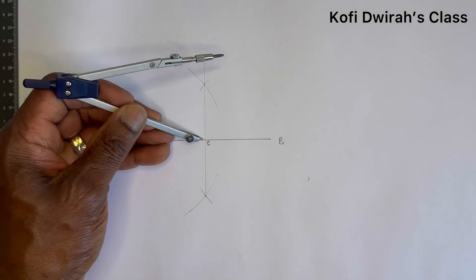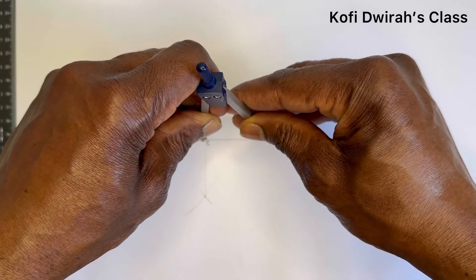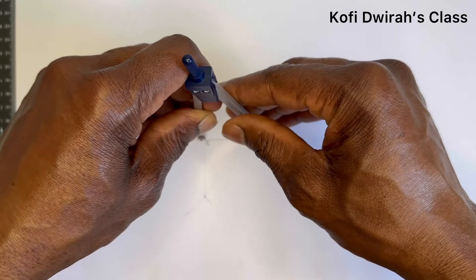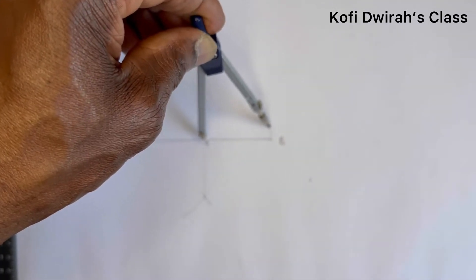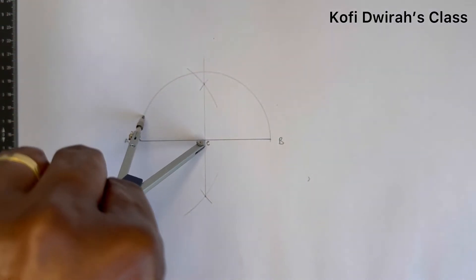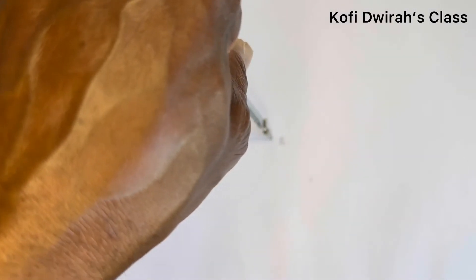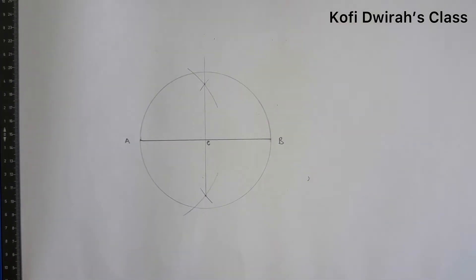At the center, point C, you put your compass to point A or B, then you draw a circle. So now we have this circle.